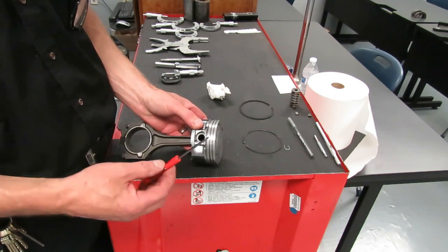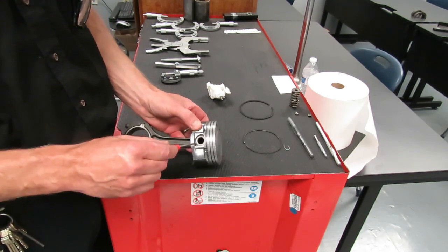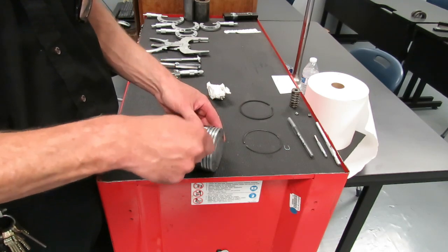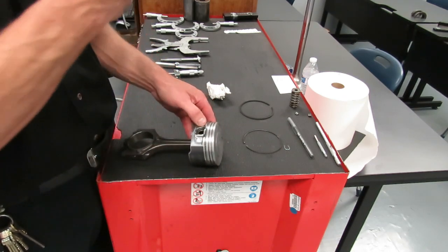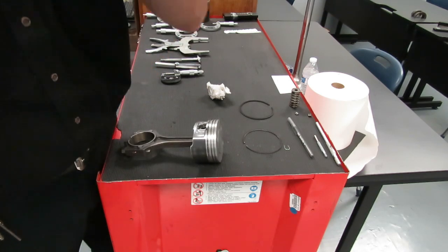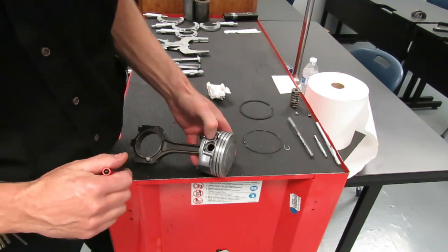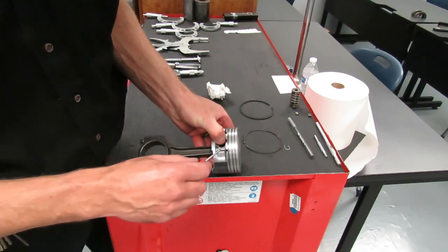Now you have a C-clip in here. If you look at that little cutout there, you want to take your screwdriver and pry that C-clip out. Now it's very critical, you guys, that you keep your thumb over that C-clip, over on this side.